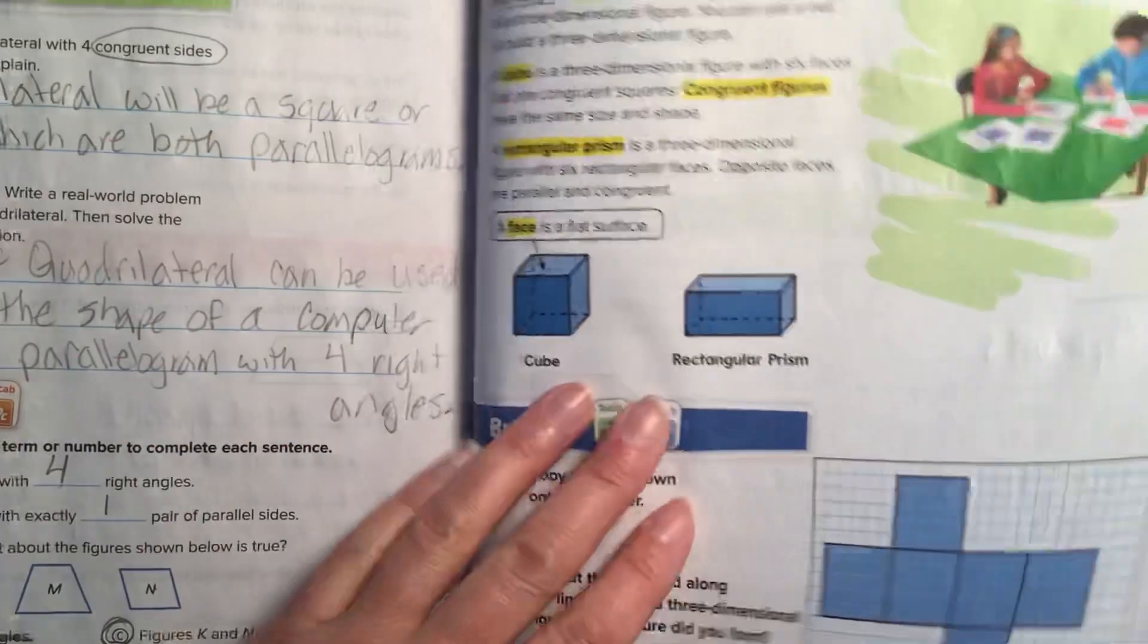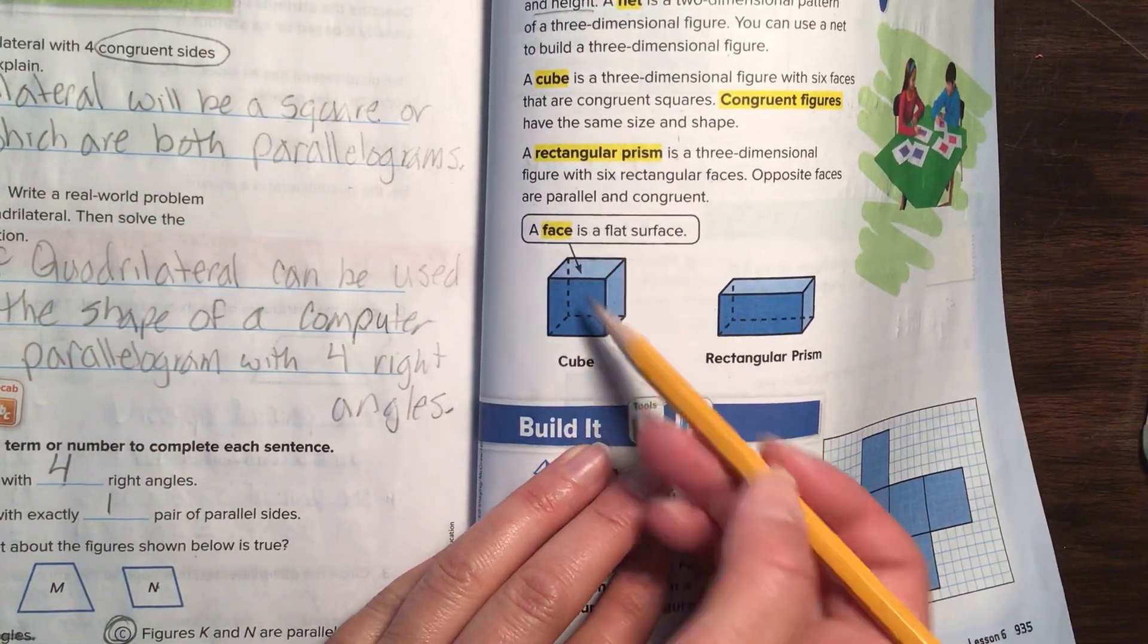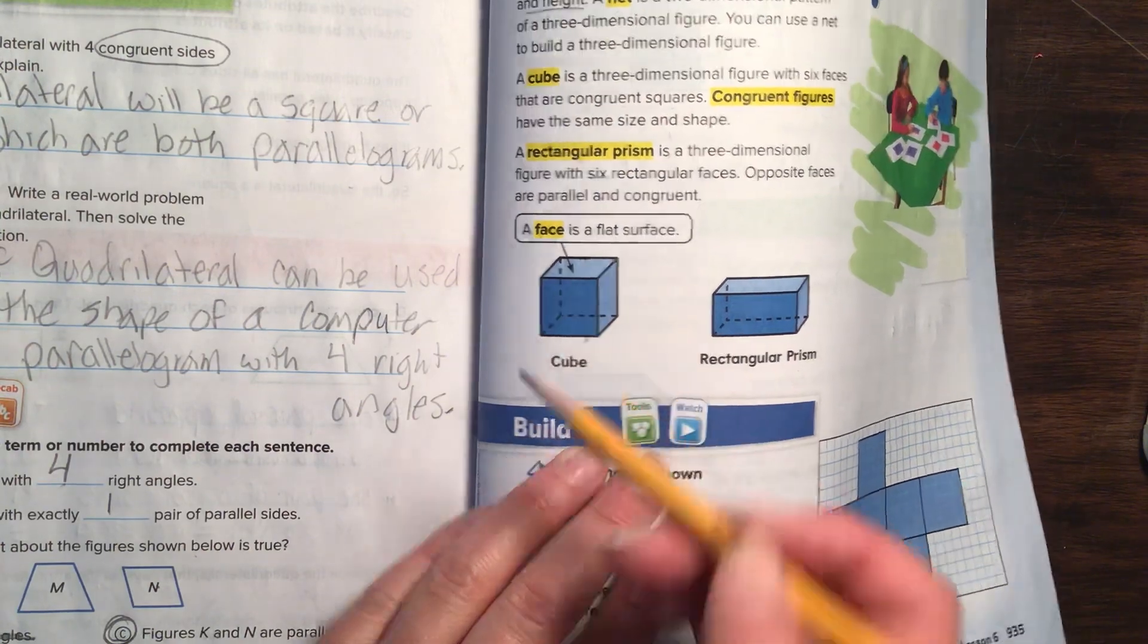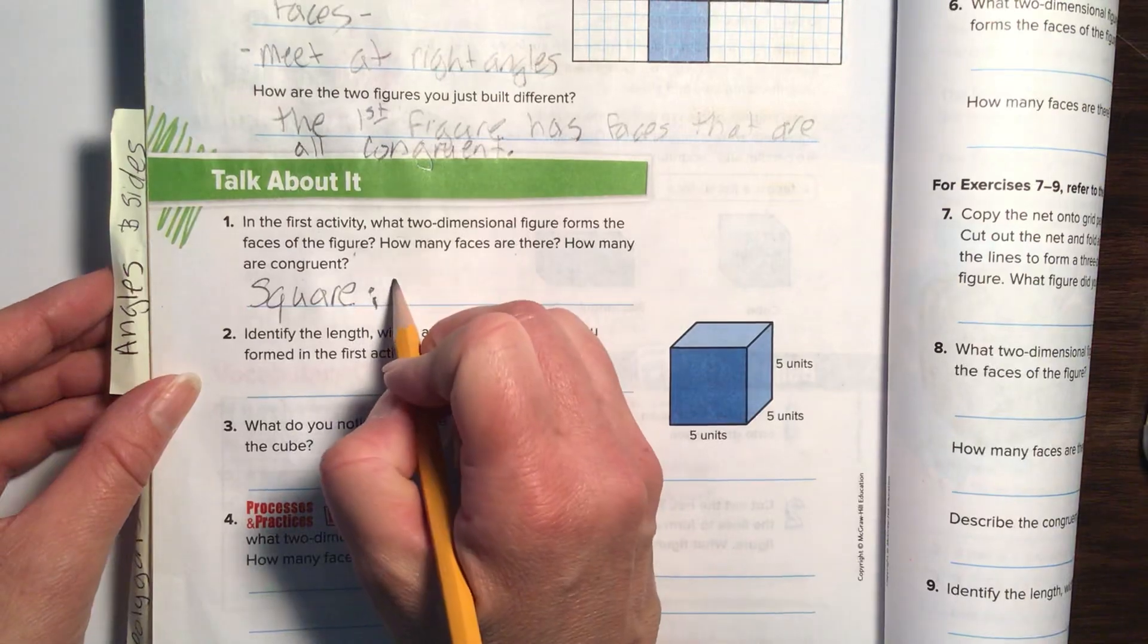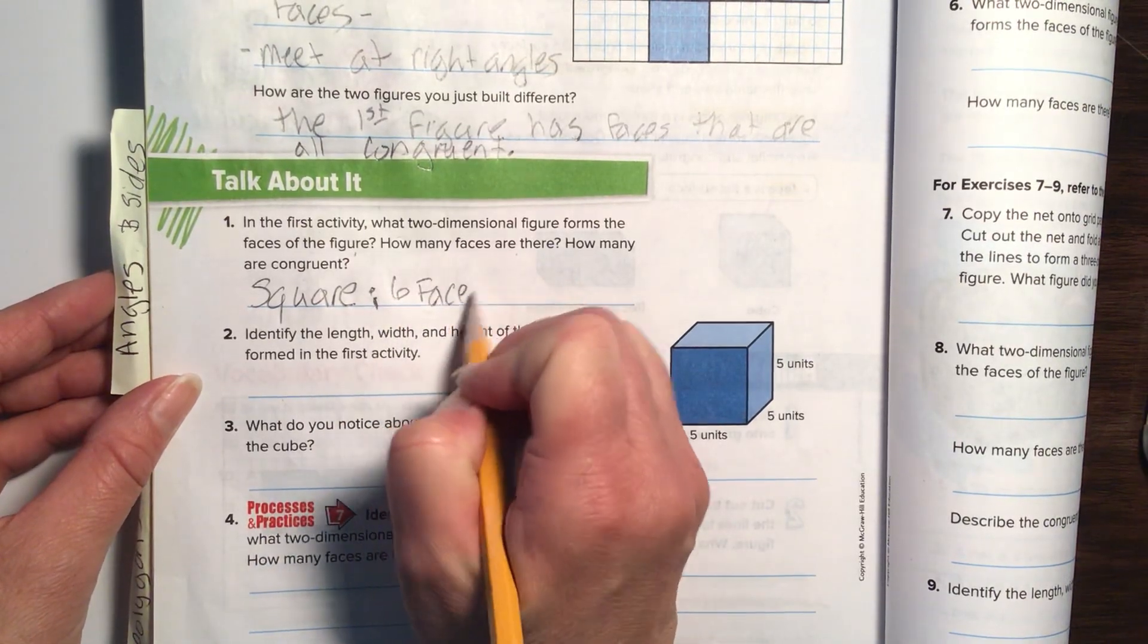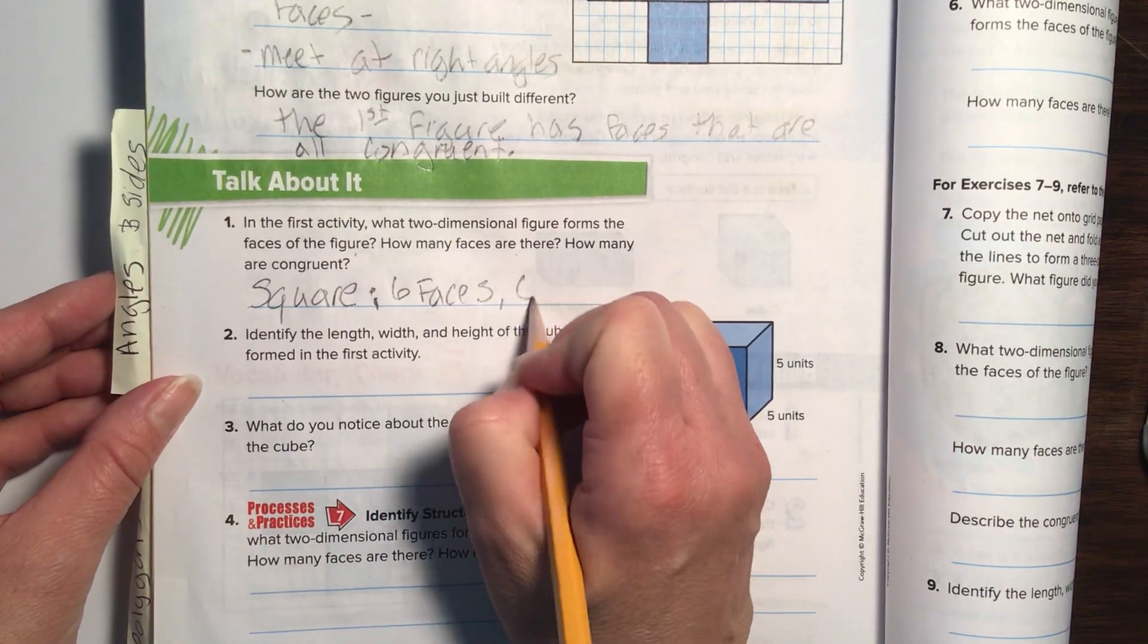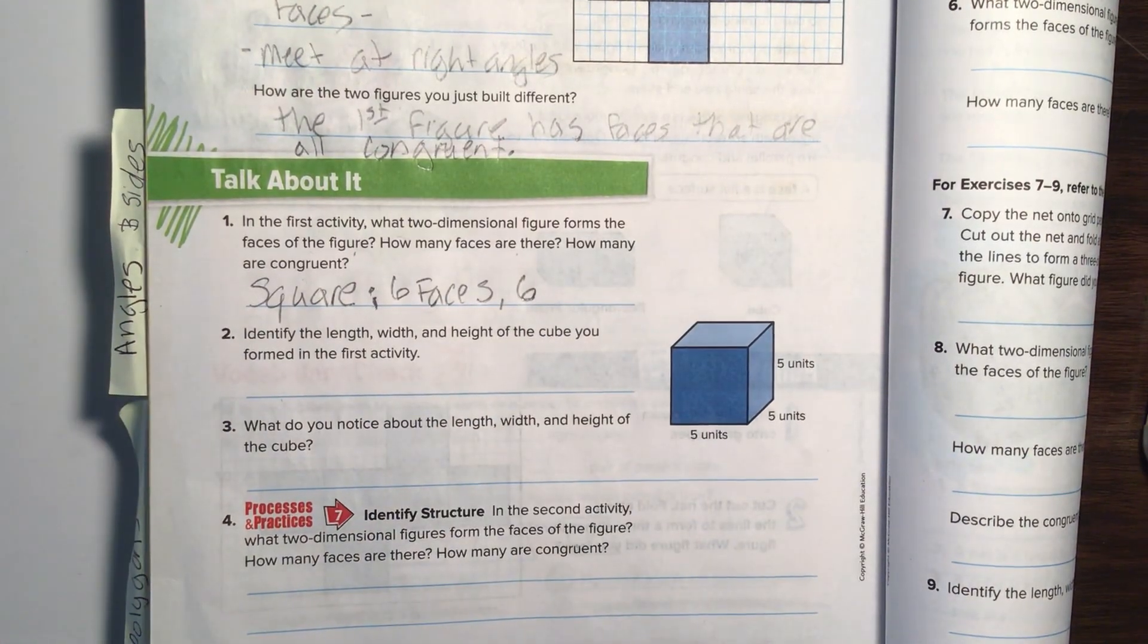Then it wants to know how many faces are there. So if we were to count this, for the top and the bottom, it would be one and two. And then we go all around the side. One, two, three, four, five, six. There will be six faces there. And how many are congruent? Well, because it's a square, so all six are congruent. That's not so bad.